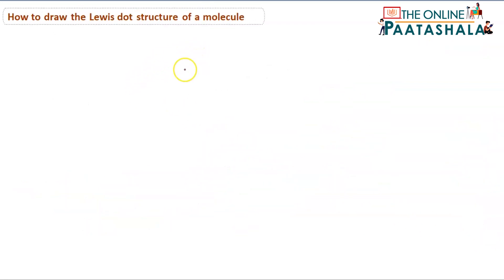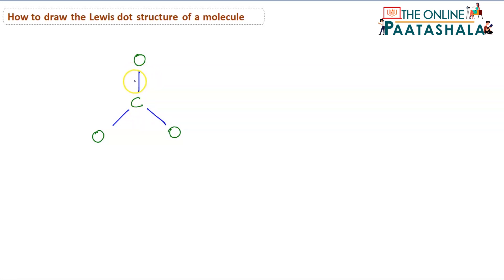So how does the structure actually go? We have carbon in the center with oxygen on each side, each connected by a single bond. To attain octet, carbon needs 2 more electrons. This can be achieved by forming a double bond with one of the oxygens — that gives carbon another 2 electrons, making 8 total and satisfying the octet.